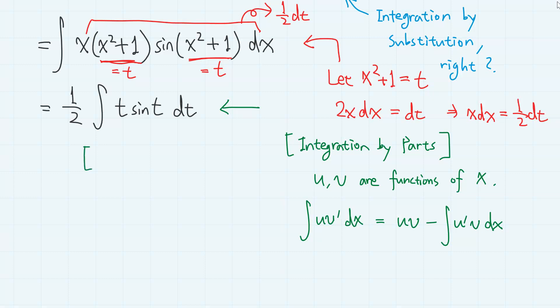So we apply integration by parts with u as t and v prime as sine t. Then u prime is 1 and v is minus cosine t. So we have 1 half u v, so minus t, cosine t,